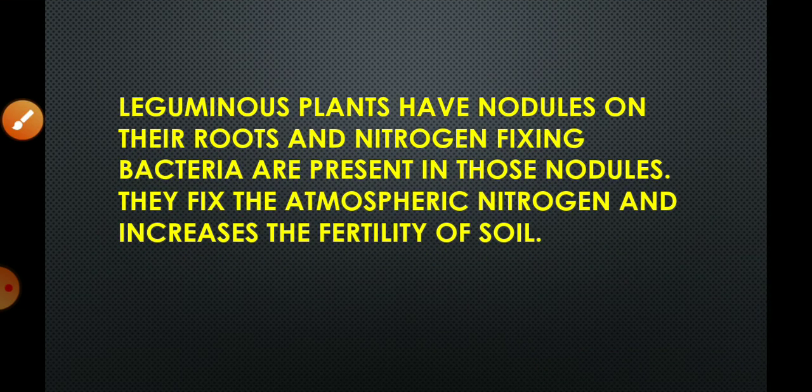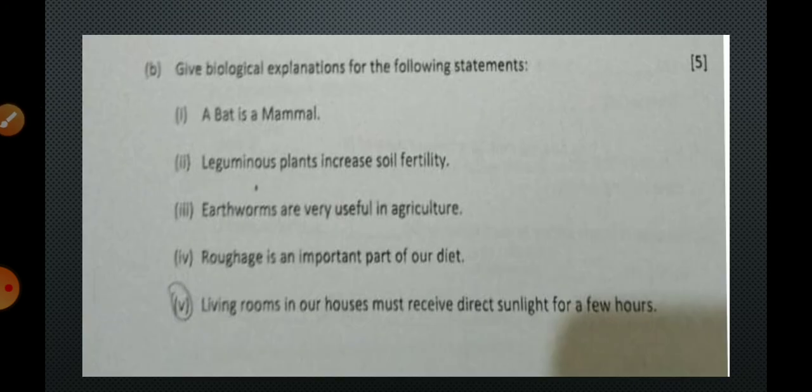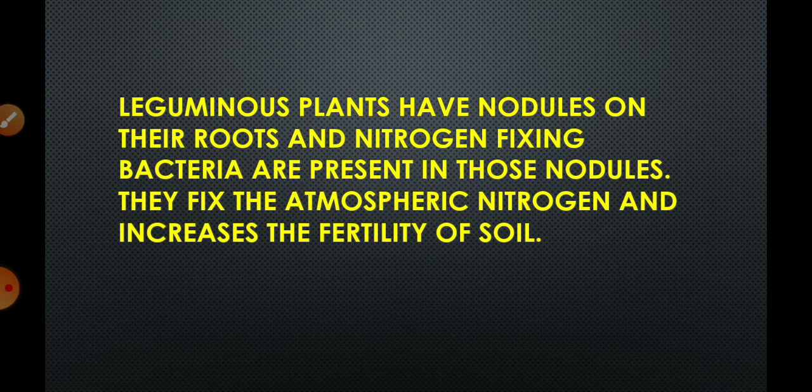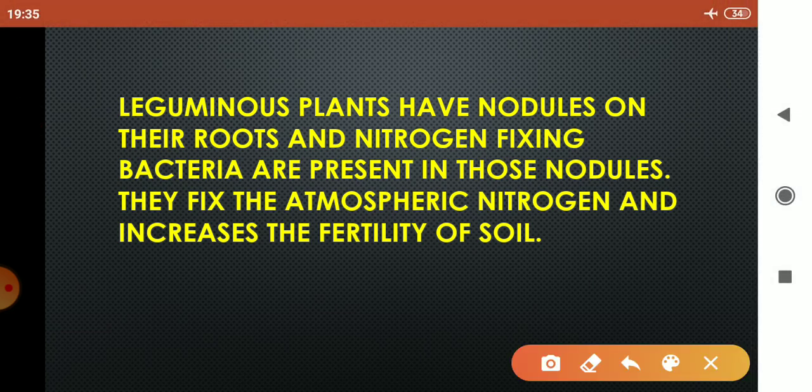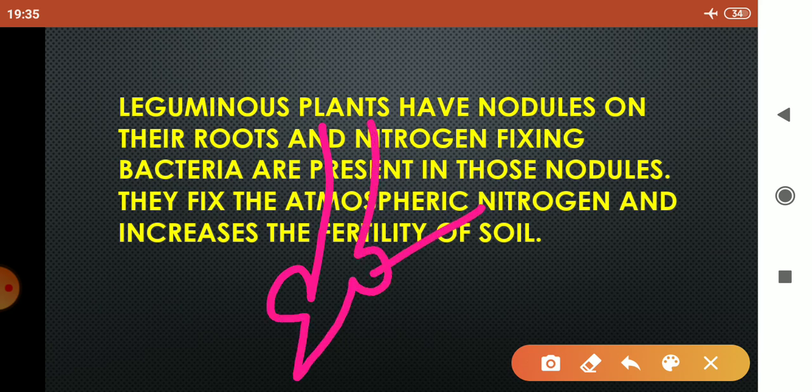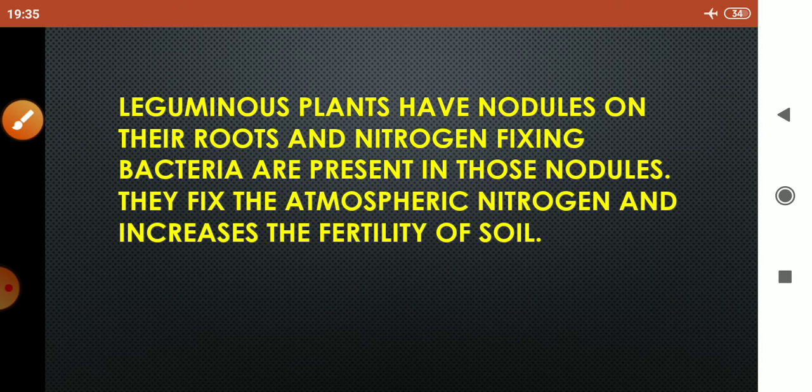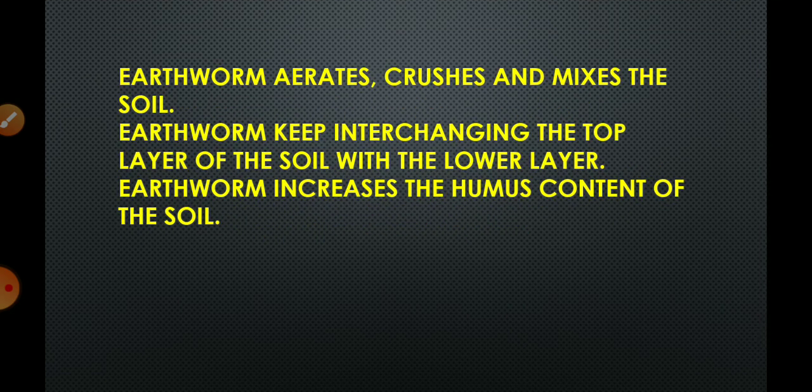Leguminous plants increases the soil fertility because leguminous plants have nodules on their roots. And in these nodules nitrogen fixing bacteria are present. Because plants do not have the ability to take the nitrogen directly, these nitrogen fixing bacteria convert the atmospheric nitrogen into ammonium ions that can be easily taken up by the plants. Therefore, these leguminous plants increases the fertility of the soil by increasing the nitrogenous content.